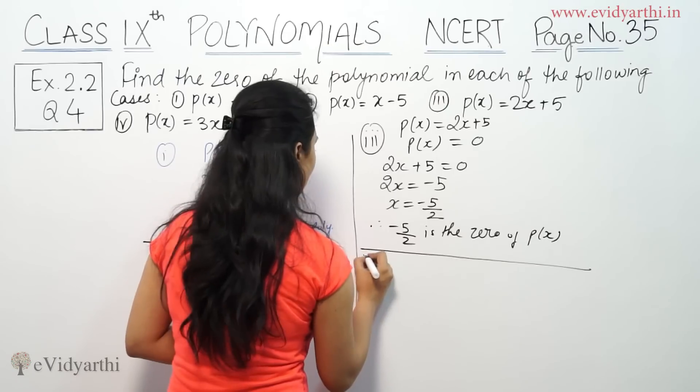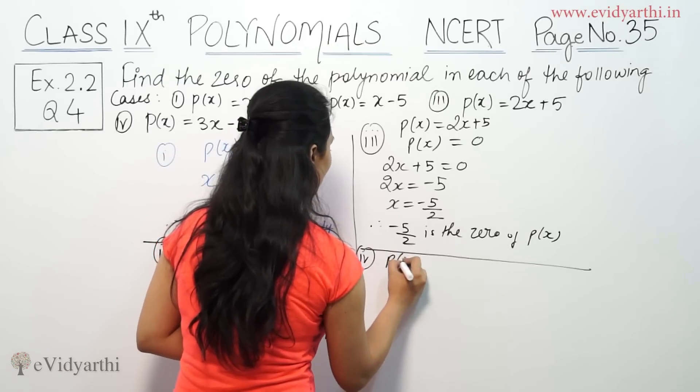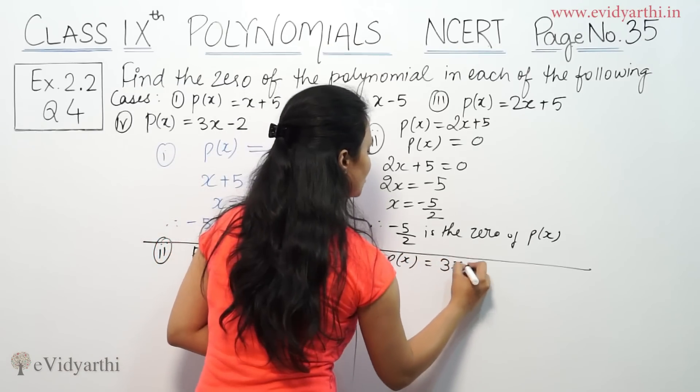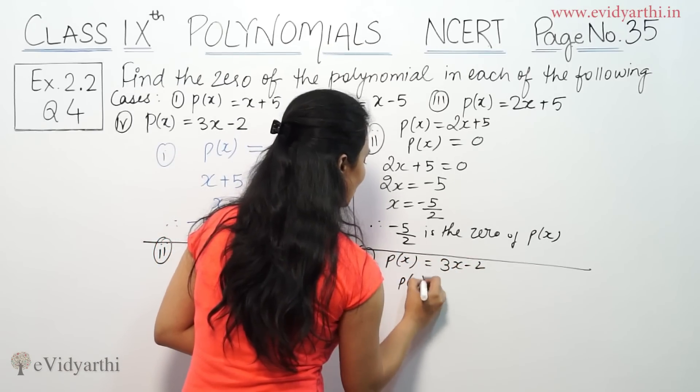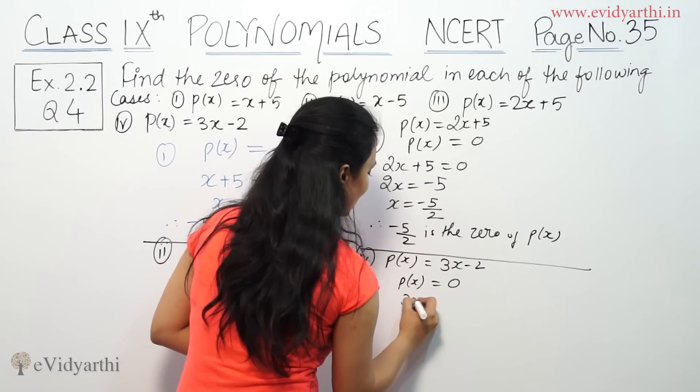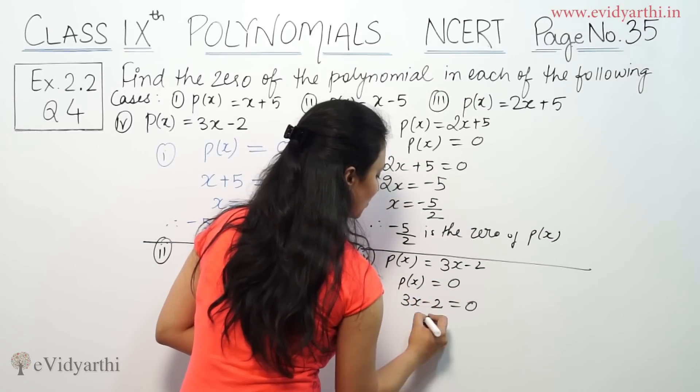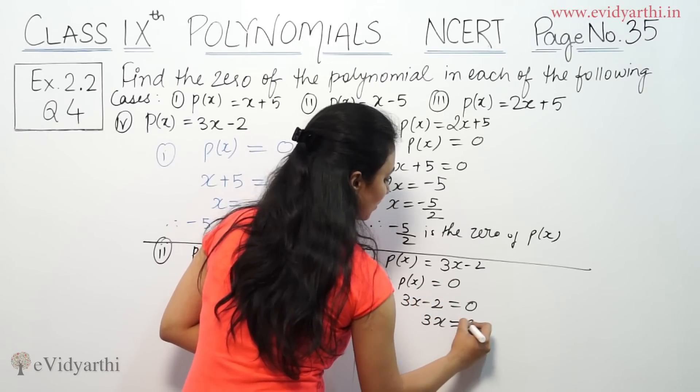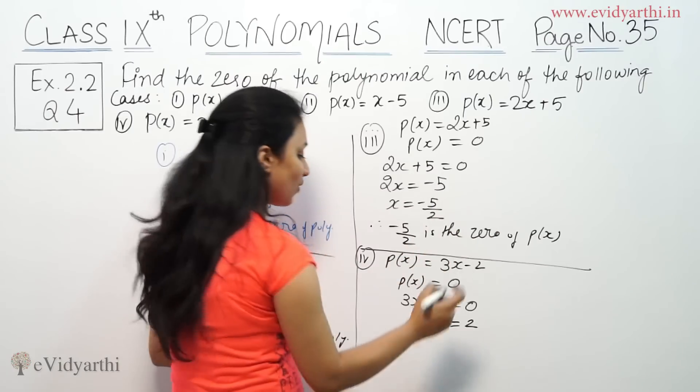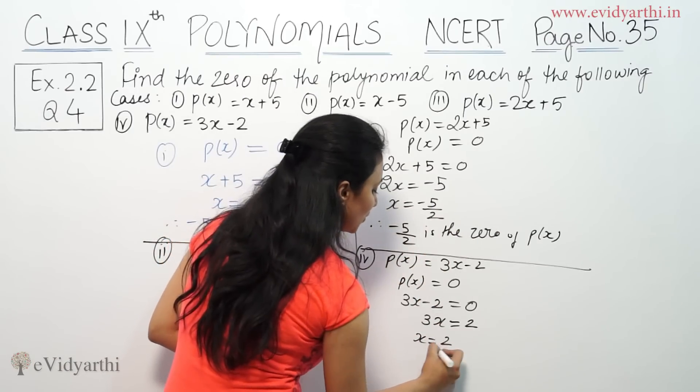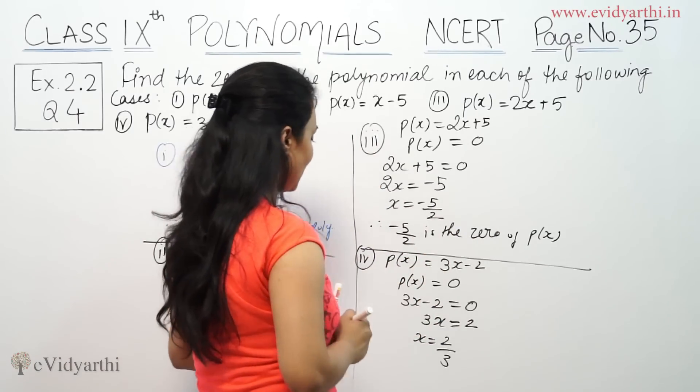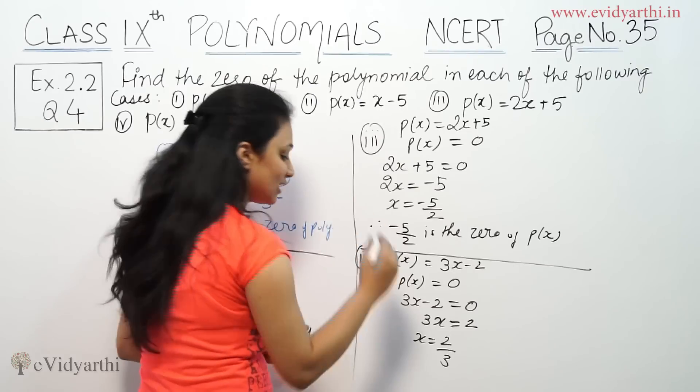Next is number 4. P(x) given is 3x minus 2. That means 3x minus 2 is equal to 0. 3x will be equal to positive 2, and x will be equal to 2 by 3. So that means 2 by 3 is the zero of p(x).